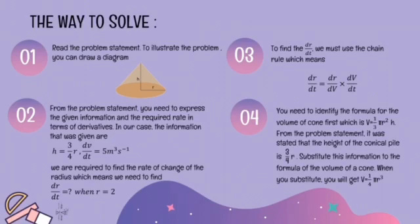We are required to find the rate of change of the radius, which means we need to find dr/dt when r equals 2. The third step is to find dr/dt using the chain rule: dr/dt equals dr/dv times dv/dt. The fourth step is to identify the formula for the volume of a cone: V equals 1/3 π r² h. From the problem statement, the height is 3/4 r. Substituting this gives V equals 1/4 π r³.